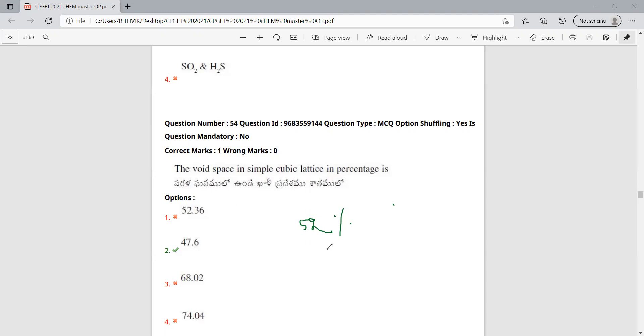100 minus 52 is approximately 48 percent. 48 percent is the void. Therefore, that is the answer.